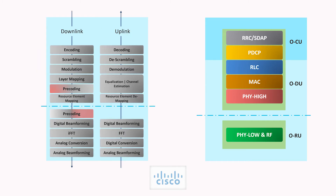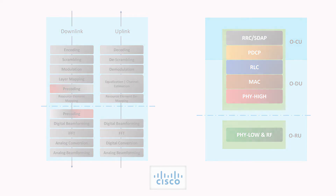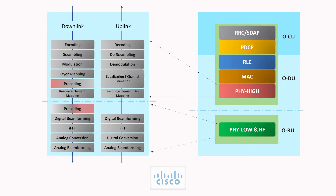Looking at the functions residing in the ODU: there will be optional IQ compression, followed by RE mapping, pre-coding, layer mapping, modulation and scrambling. At the ORU, there will be optional IQ decompression, pre-coding and digital beamforming, along with the mandatory IFFT, FFT and CP addition/removal functions, as well as the digital-to-analog and analog beamforming functions.